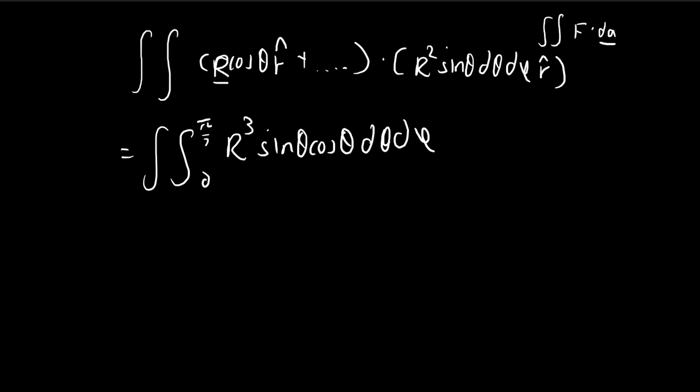So theta goes from zero to pi over 2, phi goes from zero to 2 pi. So we're about to integrate out the phi, then we have phi terms inside, so we get 2 pi. So we're going to put the 2 on the inside, so we get sine 2 theta again. And just like before, as we've evaluated, this integral is equal to 1. So there we get pi R to the power of 3.